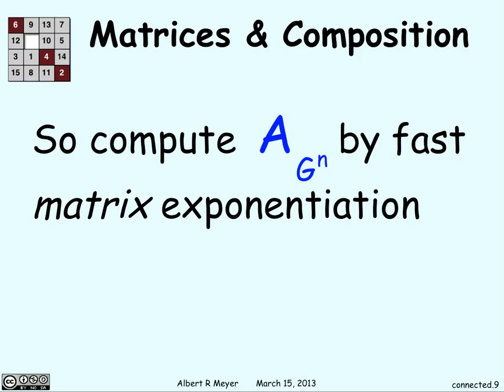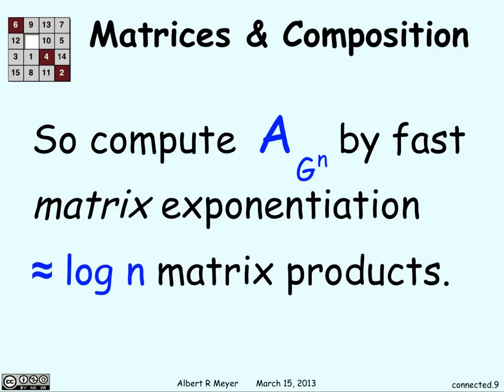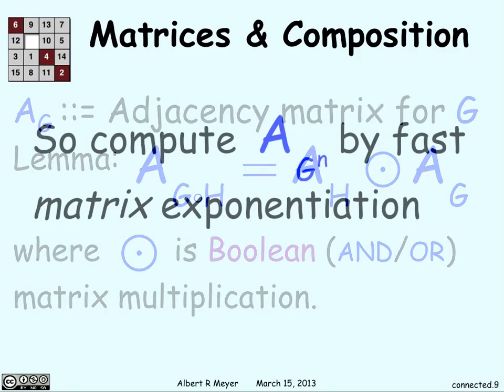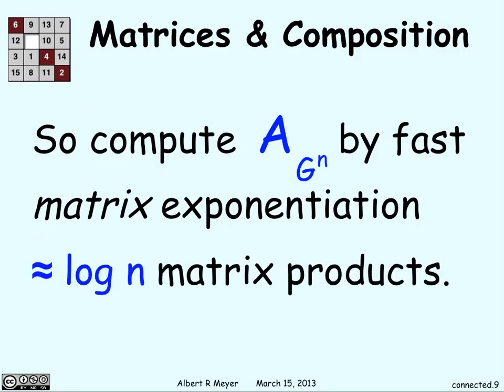So we can compute g^n by fast matrix exponentiation. How do we do that? Basically, you can do it for g^(n/2) twice, and then g^(n/4) for each of those twice, and do those Boolean operations on each. So A_g^n equals A_g^(n/2) applying this operator to A_g^(n/2). So you can just break it down in 2 each time, so we get logarithmic number of products that we have to do.